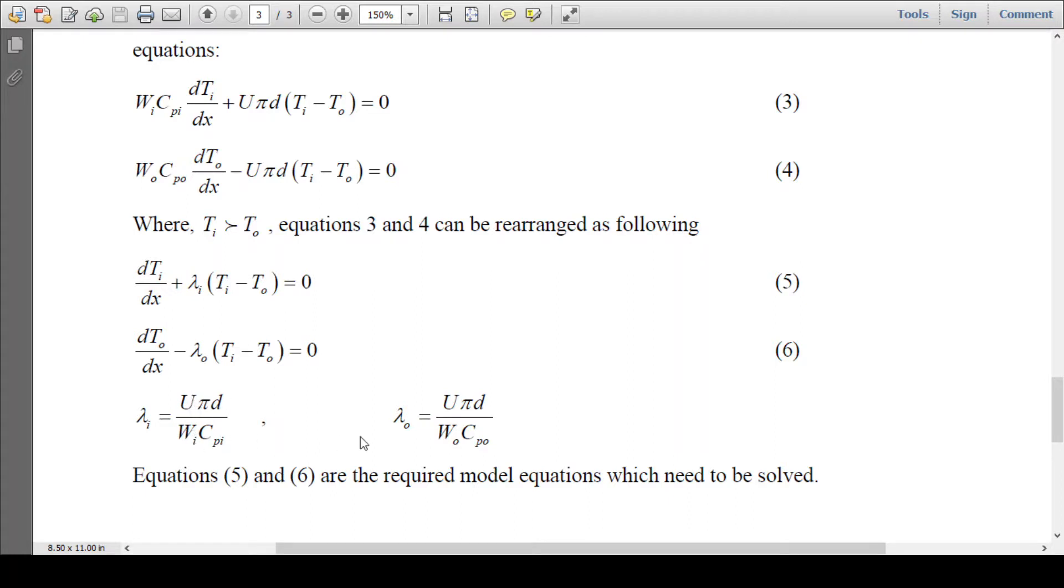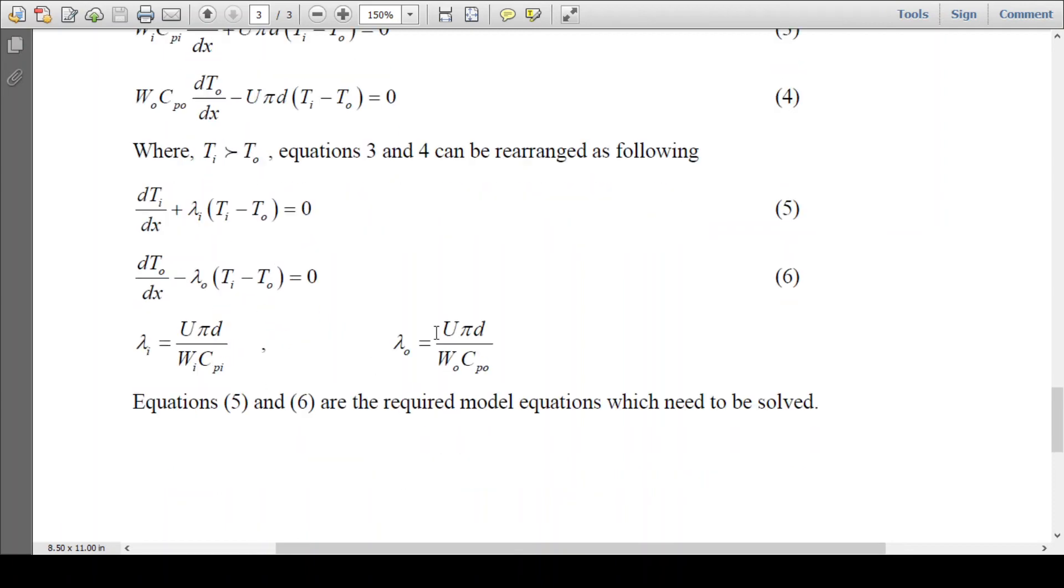dT0/dx minus lambda not times (TI minus T0) equals zero, where lambda I is U pi D over WI CPI, and lambda not is U pi D over W0 CP0. These two are the required model equations which need to be solved. It can be integrated along the length of the tube, and these are the known values and fixed, so we can integrate the temperature profile.